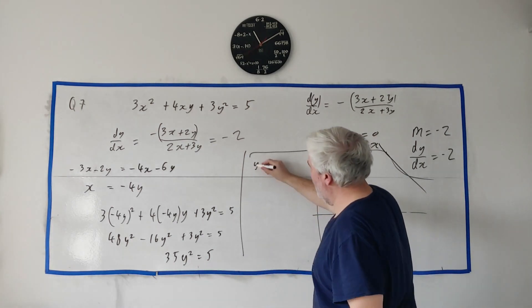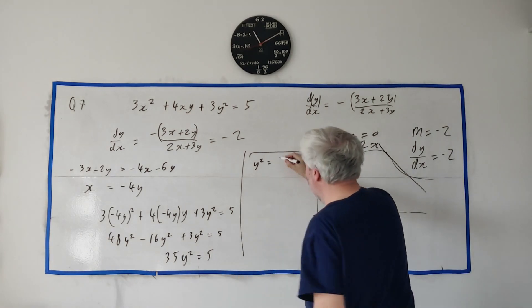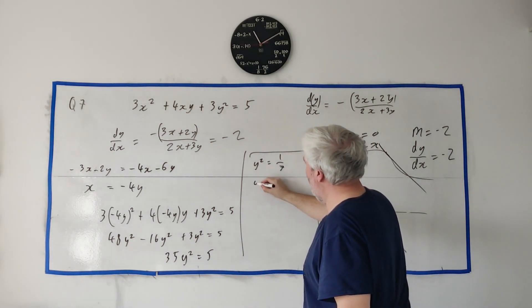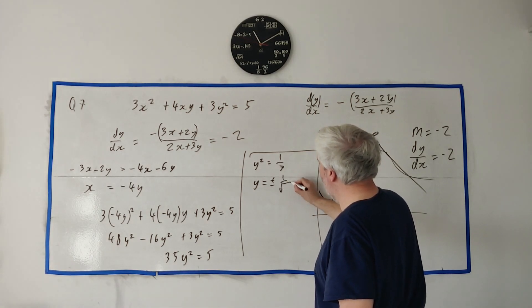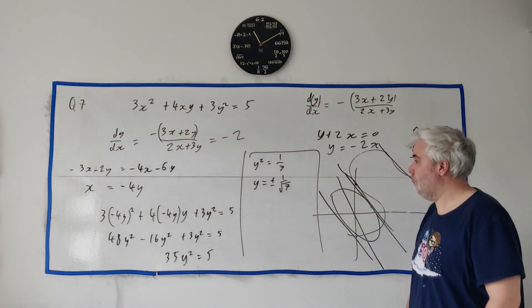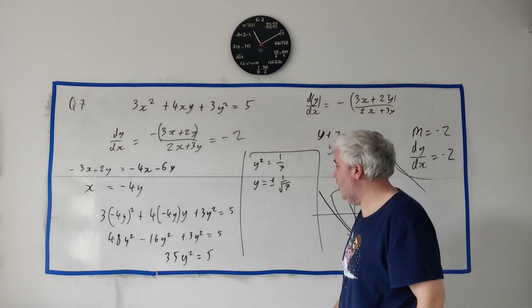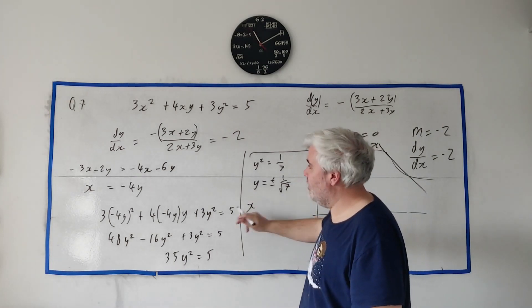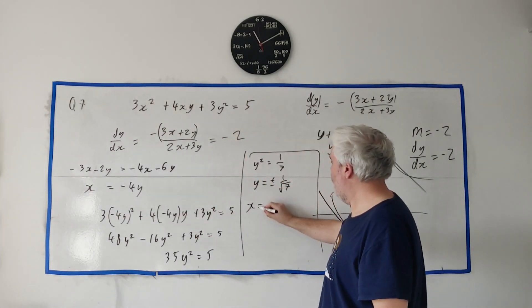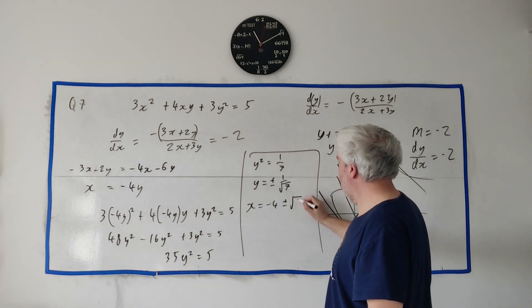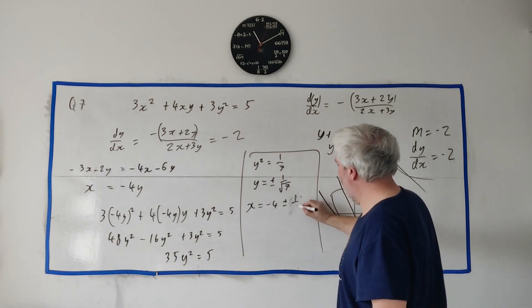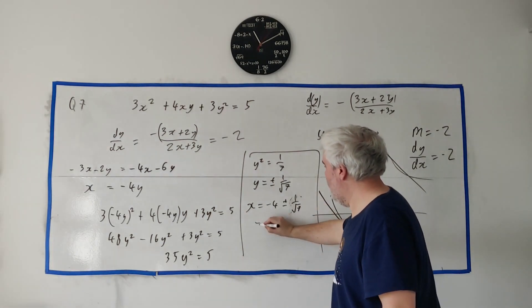And I think we have room for all this. Y squared equals 5 divided by 35, 1 over 7. Y is equal plus or minus 1 over square root of 7.